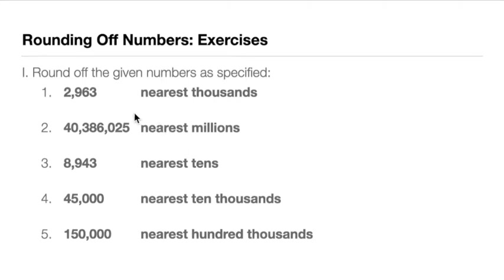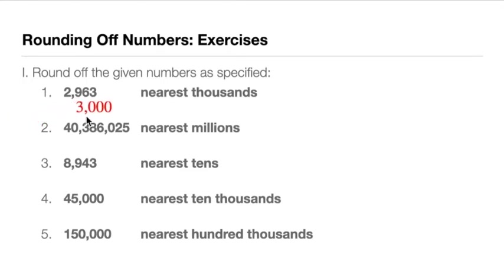Let's answer number 1: 2,963 to the nearest thousands. We look at the thousands digit, which is 2, and to the right of that 2 is 9. Since 9 is greater than 5, we round up and add 1. The answer becomes 3,000.